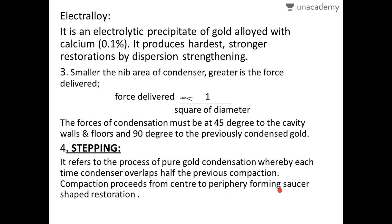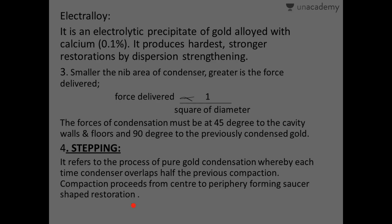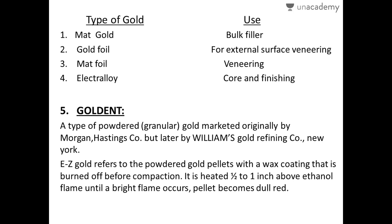Compaction proceeds from center to periphery, forming a saucer-shaped restoration. There is a higher amount of gold at the periphery and a slightly smaller amount in the center, which forms a saucer-shaped or U-shaped restoration.